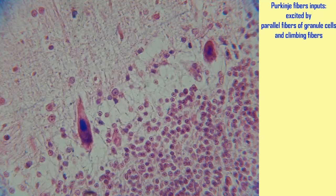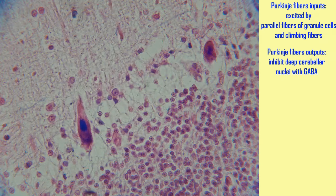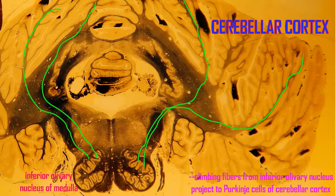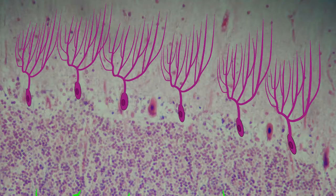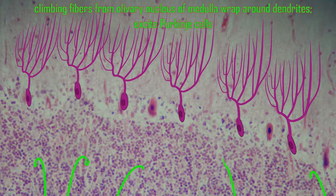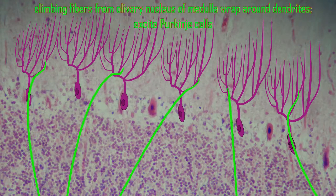The Purkinje cells can also be excited by fibers coming from the inferior olivary nucleus of the medulla, called climbing fibers. These enter the cerebellum through the white matter, pass through the granule cell layer as axons, and then wrap around the dendrites near the soma. Because of their location closer to the soma, they have a greater role in exciting the Purkinje cells than the parallel fibers.